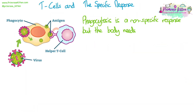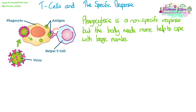Phagocytosis is a non-specific response, but the body often needs more help than just phagocytes randomly bumping into pathogens and destroying them. If we have a large number of pathogens invading and therefore quite a serious infection, we need to recruit more cells to help with the immune response.